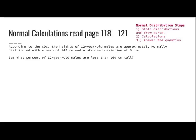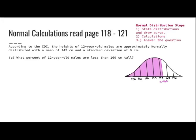The three things we want to do are: one, state our distribution and draw our curve; two, our calculations; and three, answer the question. I draw my curve with 149 as the mean and standard deviations of 9 centimeters on both sides. Since 160 doesn't fall on a standard deviation, I need to find the Z-score using the raw score of 160: (160 minus 149) divided by 9 gives 1.22.